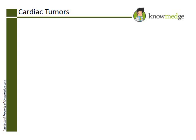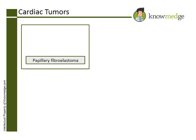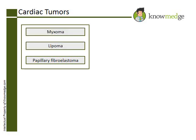This patient developed an embolic stroke from a cardiac tumor called a papillary fibroelastoma. This is the third most common cardiac tumor after a myxoma and lipoma.